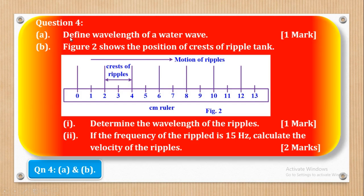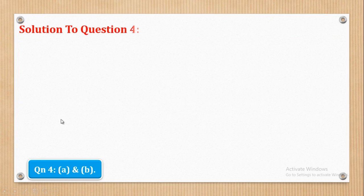We shall start with part A. Question 4 part A says: define wavelength of a water wave, and there is one mark. Then roman part B, figure 2 shows the position of crests of a ripple tank. Roman 1: determine the wavelength of the ripples, that is one mark. And roman 2: if the frequency of the ripple is 15 Hz, calculate the velocity of the ripple — that is two marks.